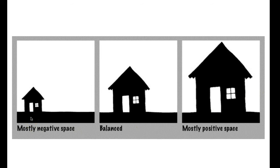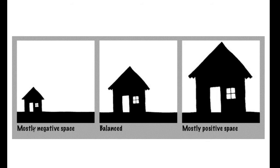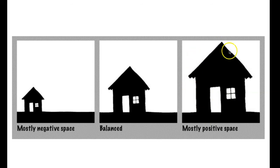Here you have different examples of positive and negative space using the same main idea — a house — and you'll see how the space impacts what the art looks like. This one is mostly negative space: the house is very small, which makes me feel like they're very alone, maybe a little house on a big farm. This one is balanced — about equal amounts of subject and background. And this is mostly positive space, where it's mostly the subject with very little background.